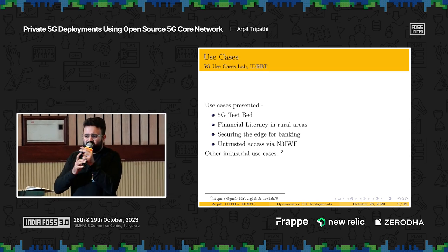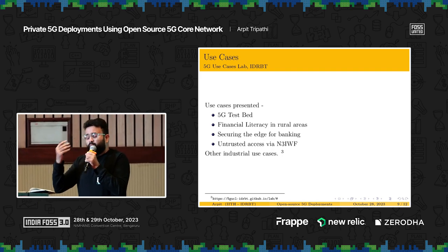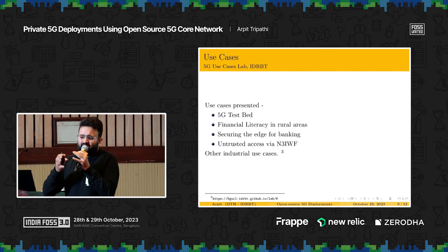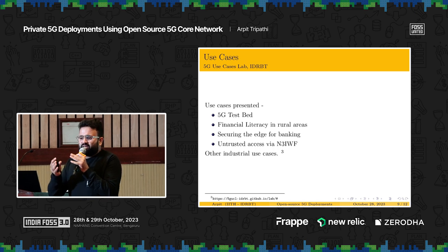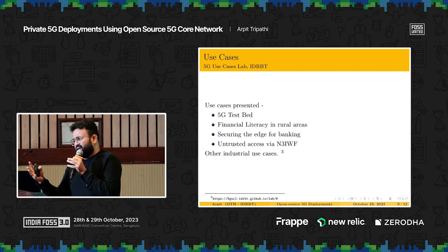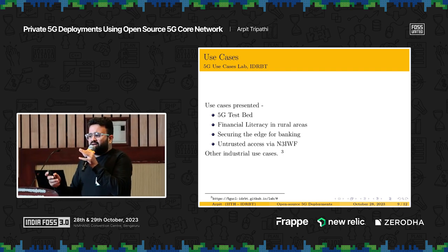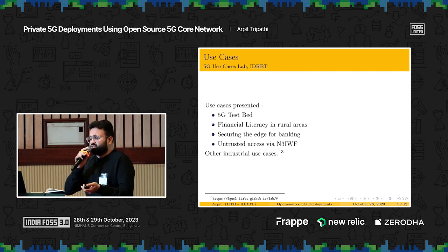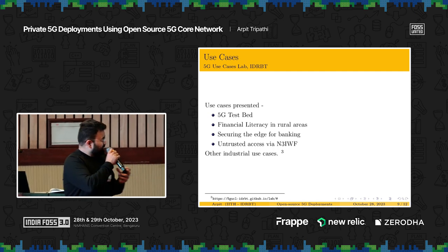At IDRBT we have worked on several use cases. The first is a 5G testbed using OAI 5G and Free5GC, where you can integrate applications. We're currently presenting a demo in New Delhi — a people-counter use case integrated with this testbed. If you can integrate one application, you can integrate any application. Another use case is financial literacy in rural areas: we took a van and integrated our 5G network with it to help villagers in remote areas learn about banking transactions and ATM usage.